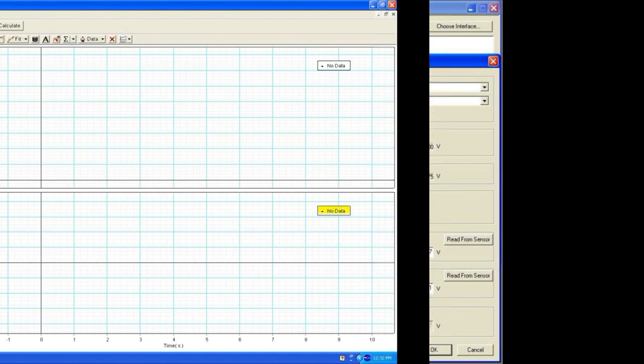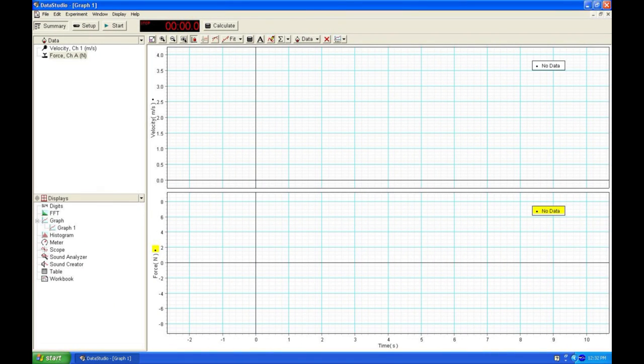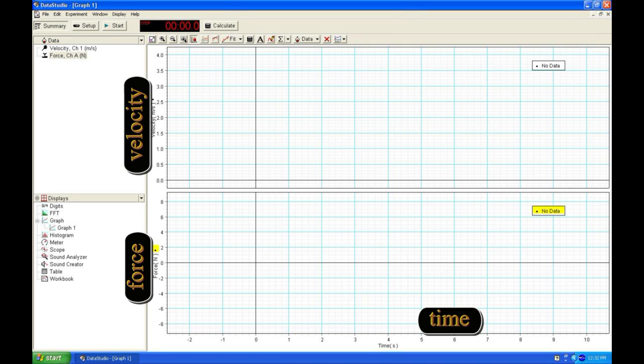Drag and drop the graph icon from the displays menu to the smart pulley at the upper left, choosing to plot velocity versus time. Drag and drop the graph icon onto the force icon at the upper left so that both velocity and force are plotted with a common time scale.